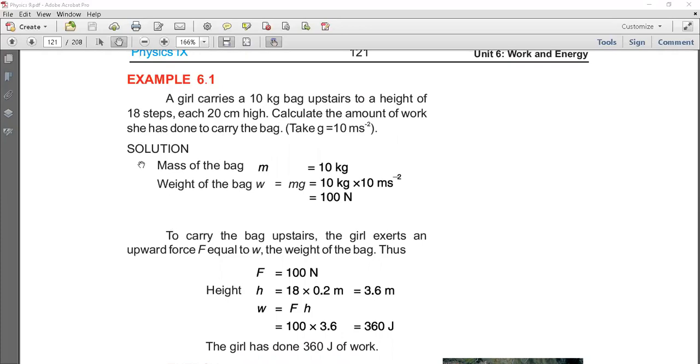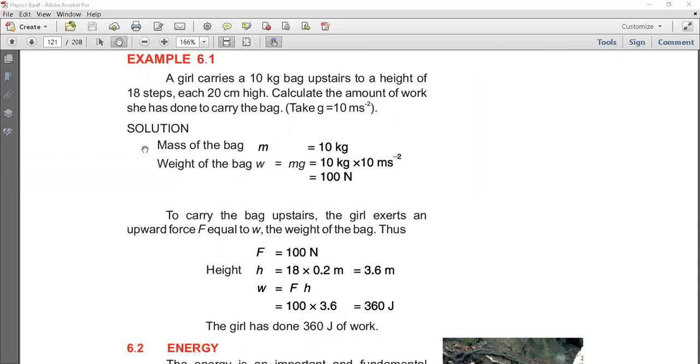First of all, what is the given data? The mass of the bag is 10 kg. Weight of the bag, W is equal to mg. The mass is 10 kg, g is acceleration due to gravity, which is 10 m/s². If we multiply it, it will be 100 N.